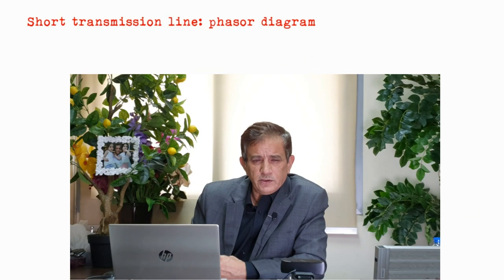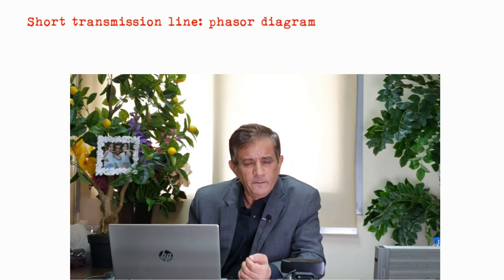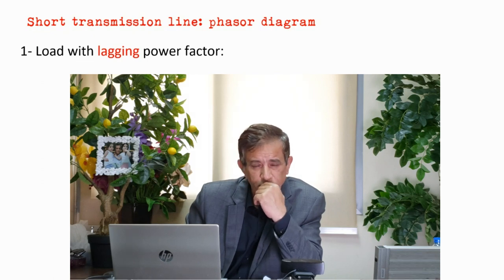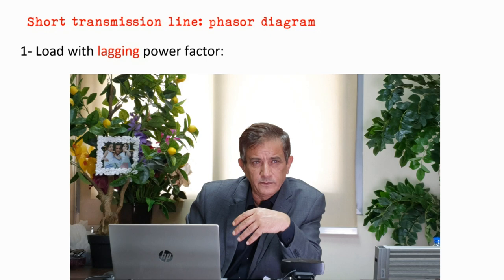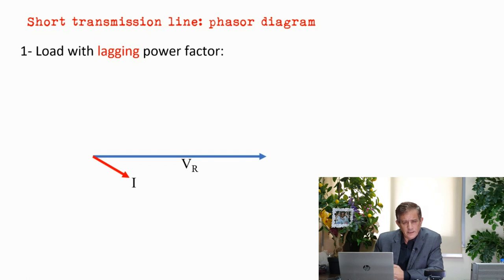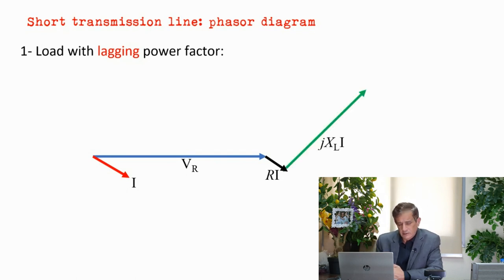Let's look at the phasor diagram of this short transmission line — we have three cases: lagging power factor, unity power factor, and leading power factor. We start with the lagging power factor, which is the normal case, as almost all loads have a lagging power factor. Taking the receiving-end voltage as reference, and the current lagging, we multiply the current by R (in the same direction as current) and by jX_L (perpendicular). The resultant is the sending-end voltage.